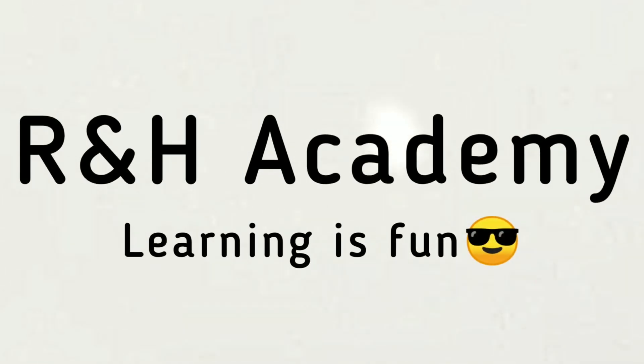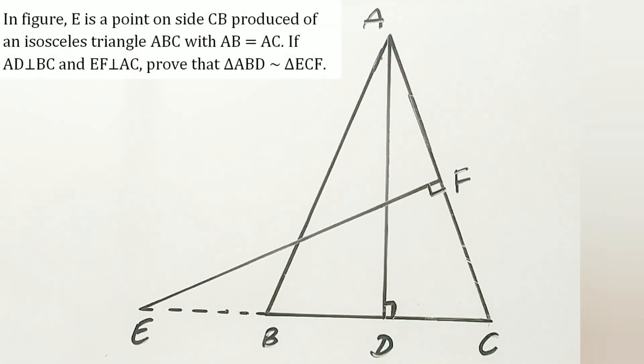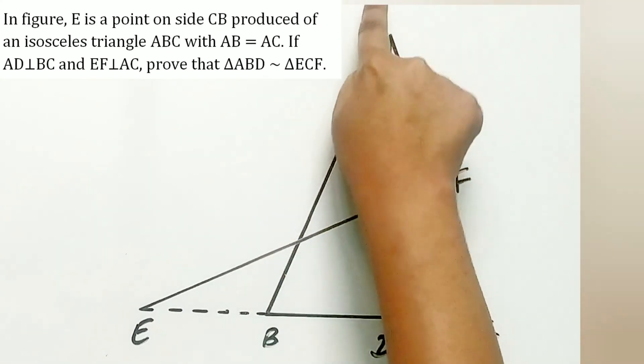Welcome to RMH Academy channel. Question 11 of exercise 6.3 says in figure, E is a point on the side CB produced of an isosceles